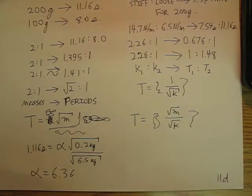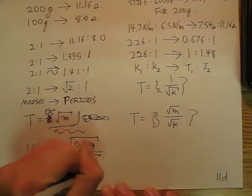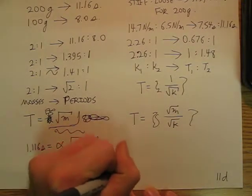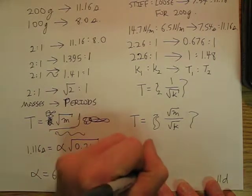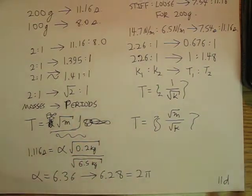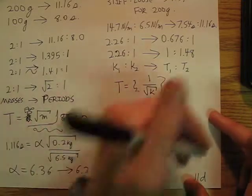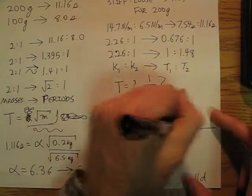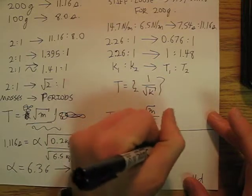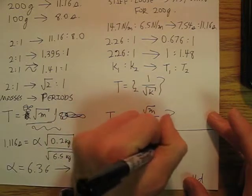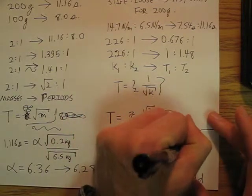What's ideal — if I did this very, very carefully — I should come out with 6.28, which would be 2 pi. So finally, the equation, the book equation, is T equals 2 pi times the square root of m over k.